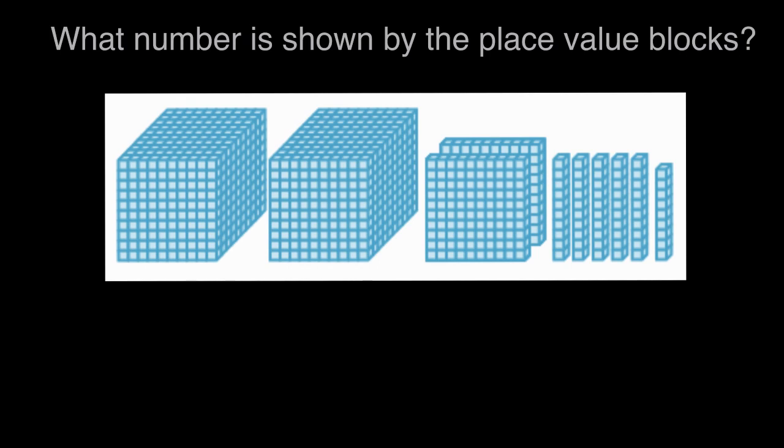What number is shown by the place value blocks? So here we have several sets of place value blocks, some with many, many, many blocks, and some with just single blocks stacked on top of each other. And we want to know what number is represented by all of the blocks combined.